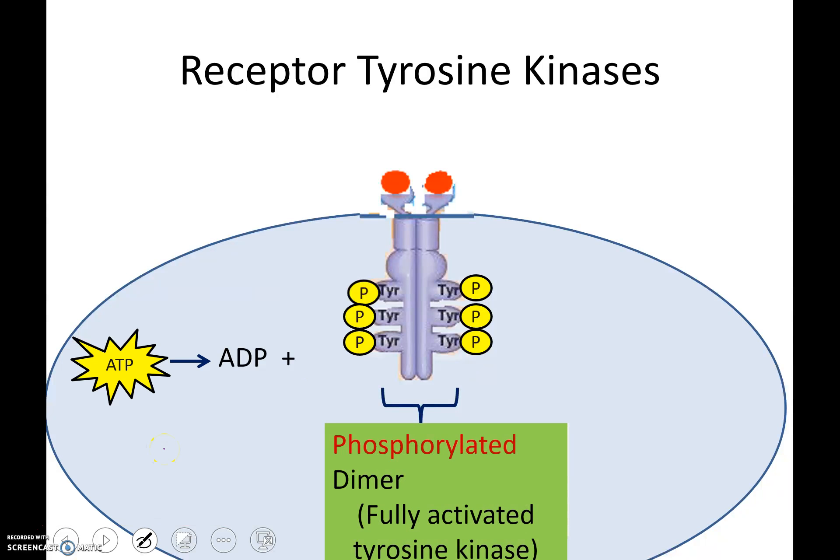Now we have a fully phosphorylated dimer and fully activated tyrosine kinase regions. At this point, we've had the message come in, but we haven't seen any steps leading to a cell response. The next step that's going to happen is we're going to have these relay proteins.